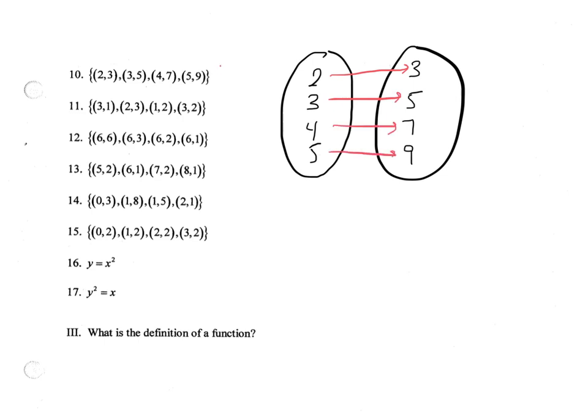And this is a function. Now if we do this with number eleven, we've got three, two, one, three. Three, two, one. I'm not going to rewrite three because we already have it. And then we've got one, three, two, two. So one, three, two, which we're only going to write once.